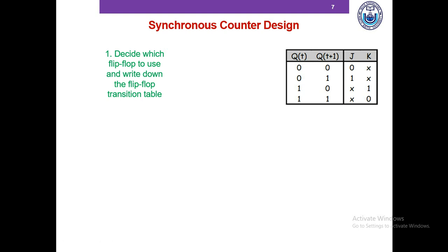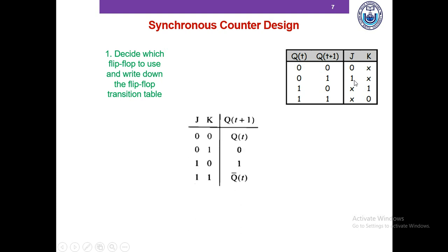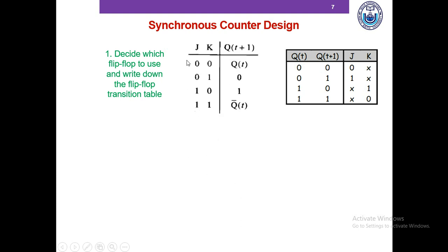To consider the right-hand side of this transition table, we need to look into the characteristic table or truth table of the JK flip-flop. This is the characteristic table or truth table of the JK flip-flop.